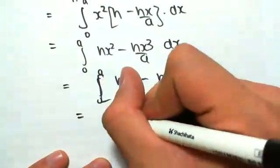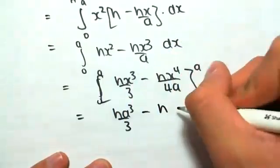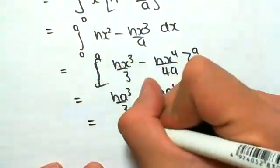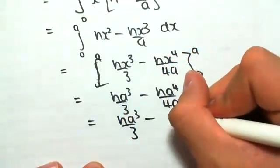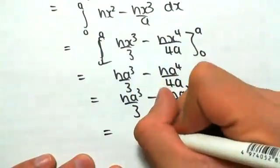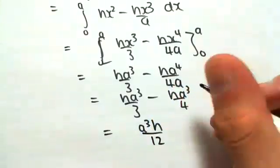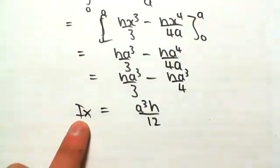this is between 0 and a, substituting in for a, we would get ha cubed on 3, minus ha to the 4 on 4a, simplifying this, ha cubed on 3, minus ha cubed on 4, and finally simplifying this, we would get ha cubed on 12, and now we have found Iy, our second moment of area.